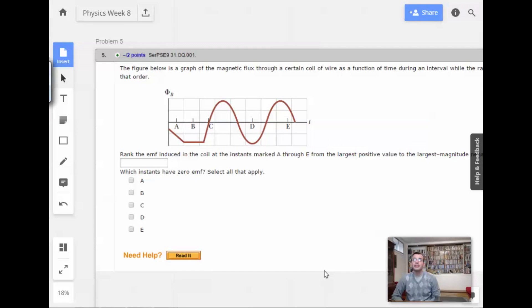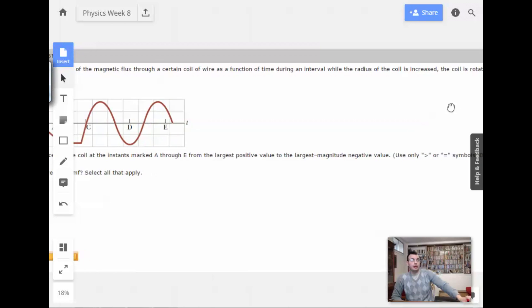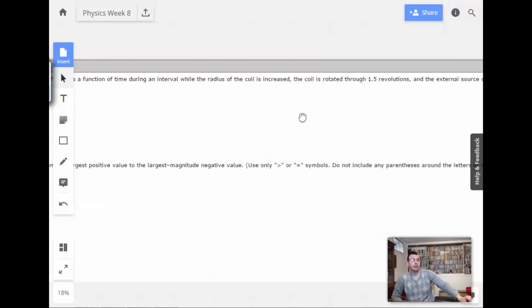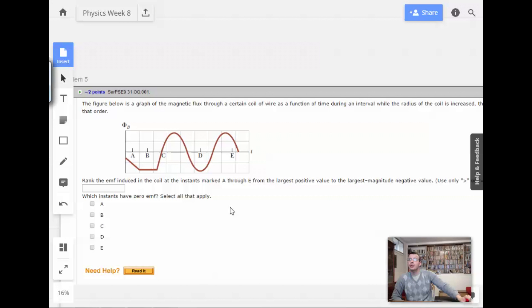Week 8, Problem 5. The figure below is a graph of the magnetic flux through a certain coil of wire as a function of time during an interval. While the radius of the coil is increased, the coil is rotated through 1.5 and the external source of the magnetic field off in that order.